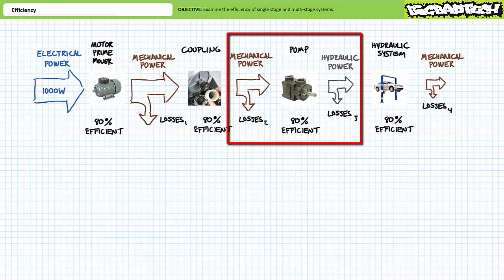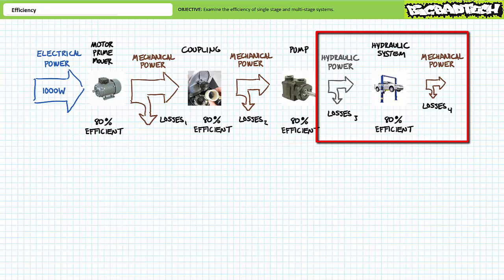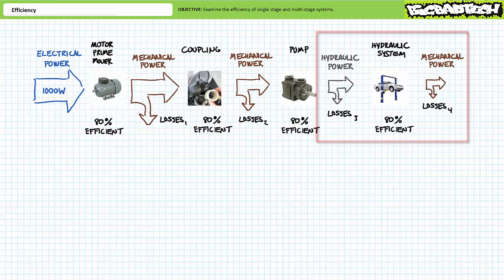The pump consumes the mechanical output from the coupling and produces hydraulic power in the form of pressurized fluid flow; losses might include leaks, noise, or heat. Finally, the hydraulic system consumes that hydraulic power and produces mechanical power output via a cylinder that applies linear force over a given distance. Losses in the hydraulic system may include leaks, heat, friction, noise, and unintended pressure drops. The initial electrical power input takes a hit at each stage, such that the final mechanical output will be much less than the original input.